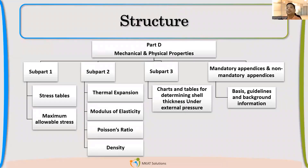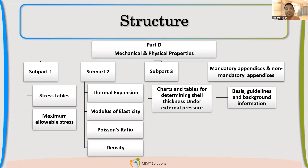Now we are going to see the structure of Section 2, Part D. In Section 2, Part D, there is Subpart 1, Subpart 2, and Subpart 3, along with non-mandatory and mandatory appendices. Subpart 1 is mechanical properties. Subpart 2 is physical properties. Subpart 3 is the external pressure calculation charts.